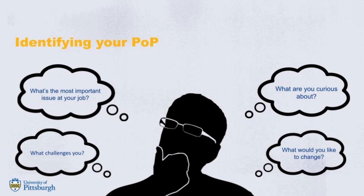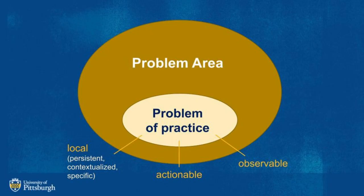When starting out, it's important for you to refine the scope of your problem of practice. Students often begin by thinking about broad problem areas like school assessment or young people's health, but those are too broad to address with a problem of practice. A problem of practice, by contrast, is tailored to a problem that you can actually address. It addresses a local, persistent problem embedded in the context of where you work. It is more specific than a broader problem area. It is actionable, meaning you can impact this problem, and it's observable, meaning you can see the problem and measure the impact.